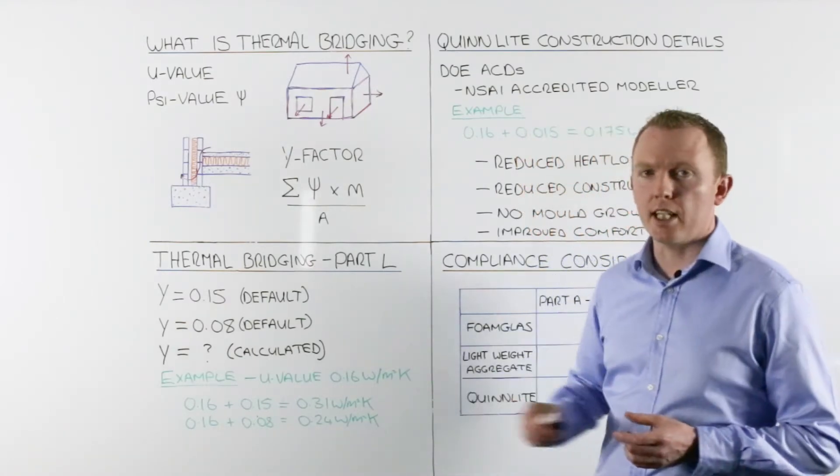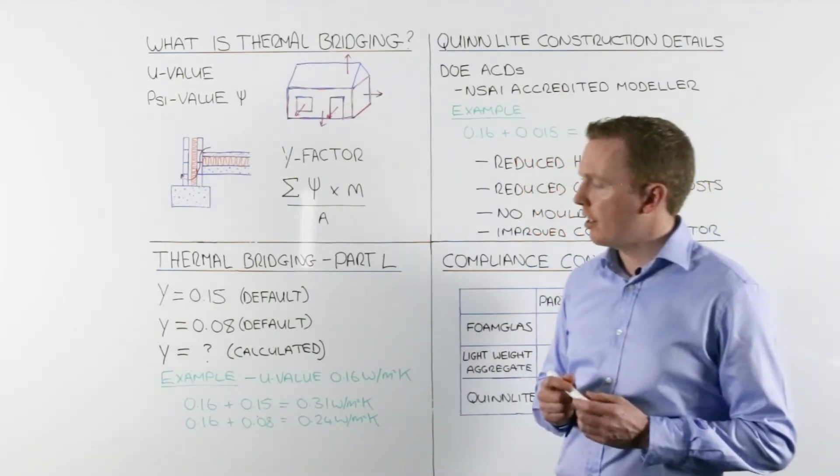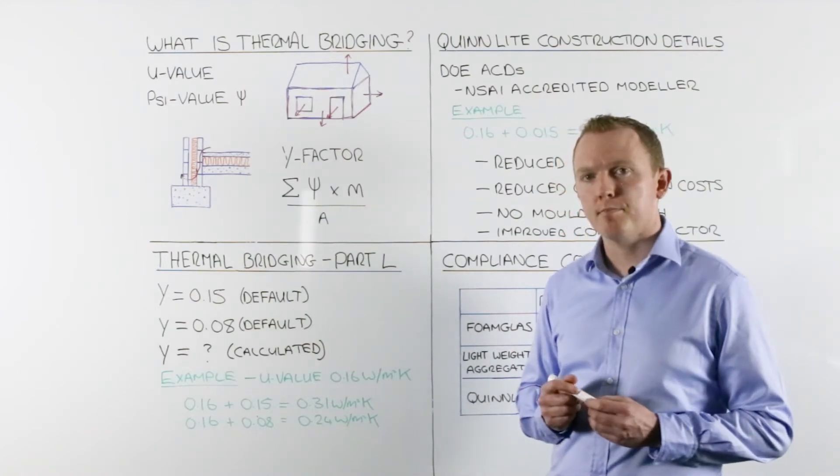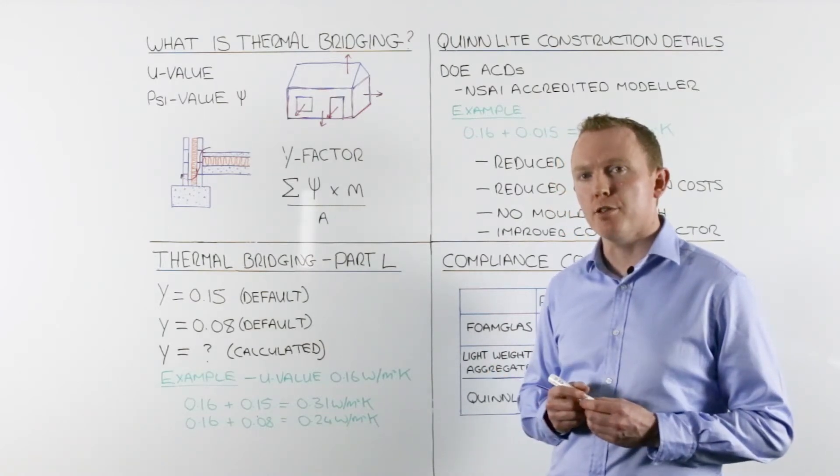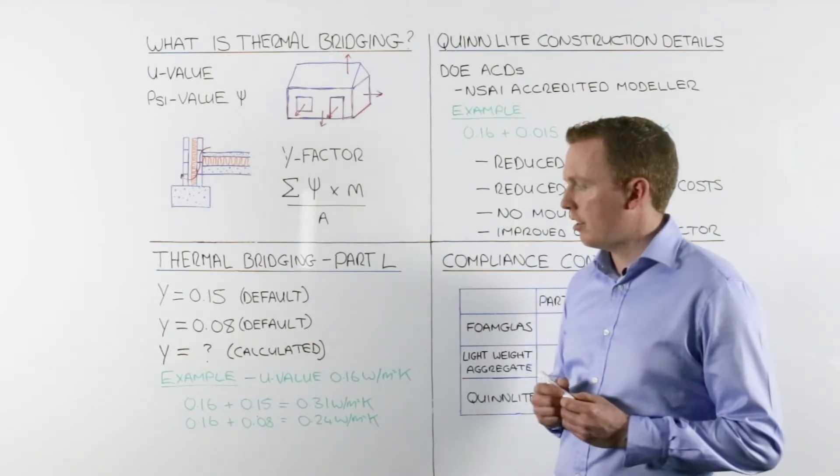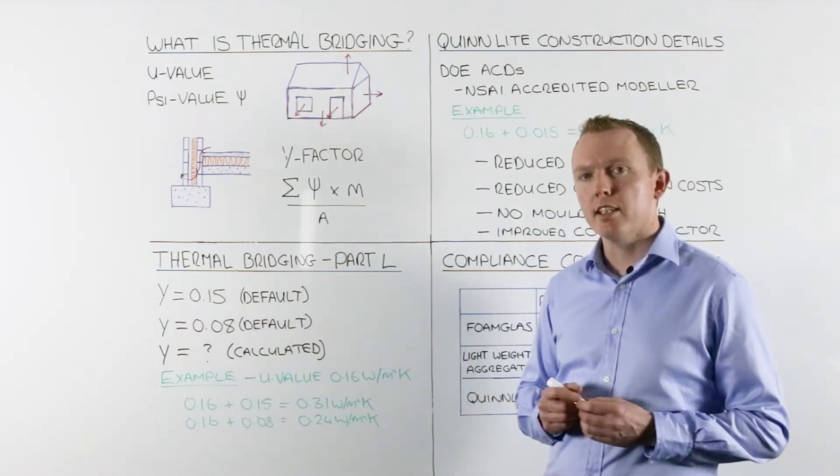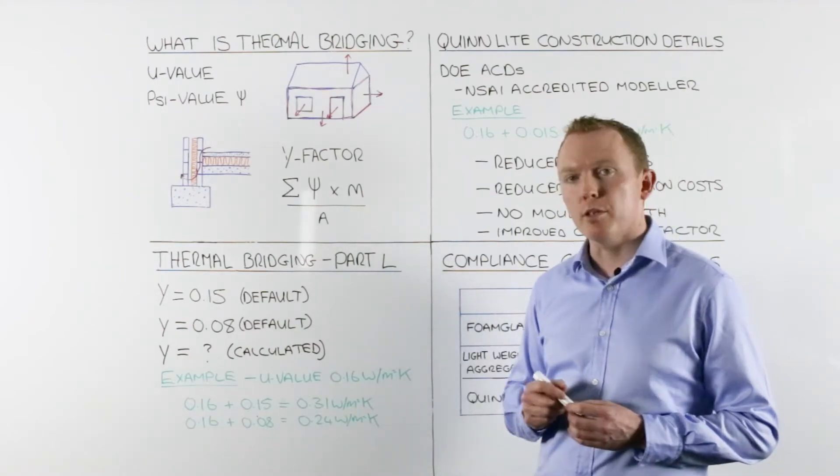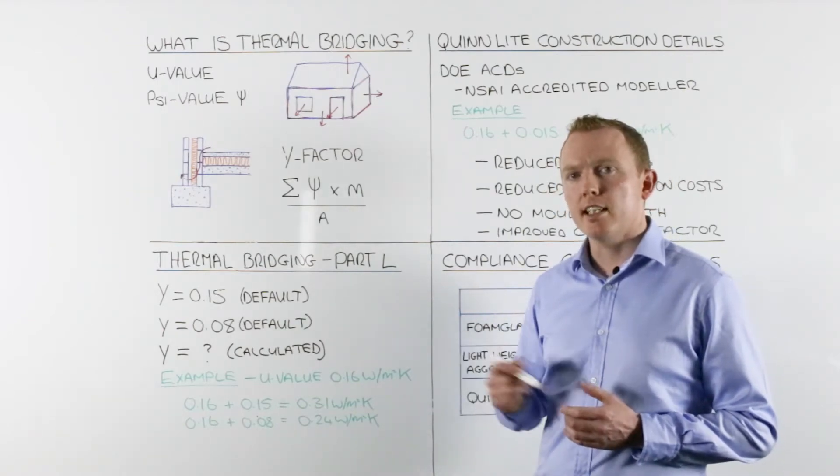The second option then is to use a Y-factor of 0.08. We can use this Y-factor if we use the DOE acceptable construction details. Whilst 0.08 is a lot better than 0.15, it still can be improved upon.